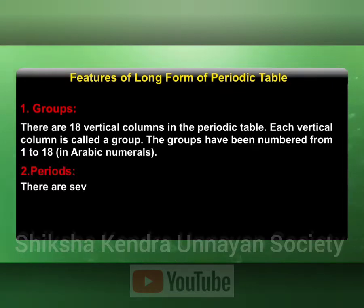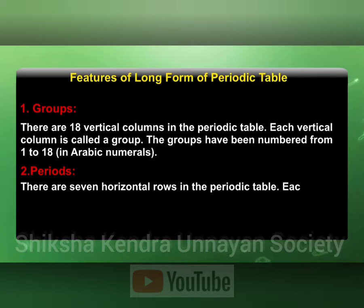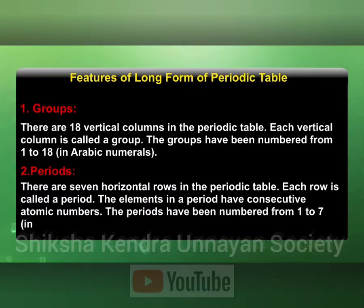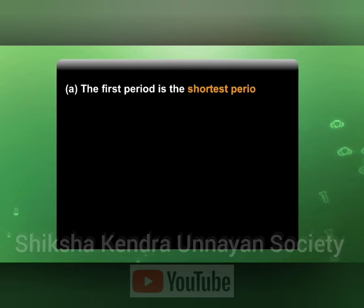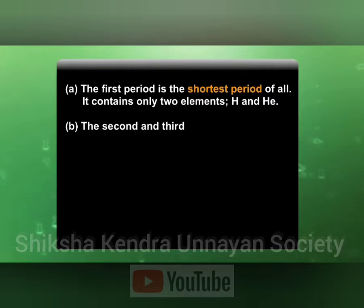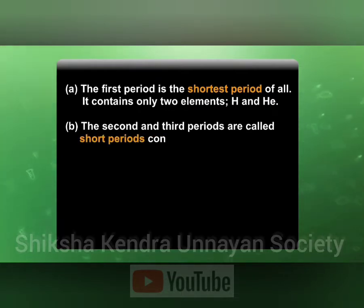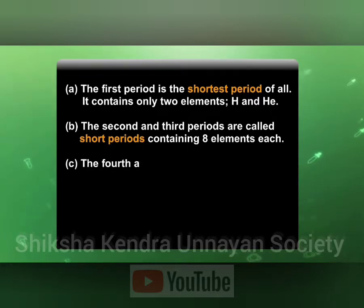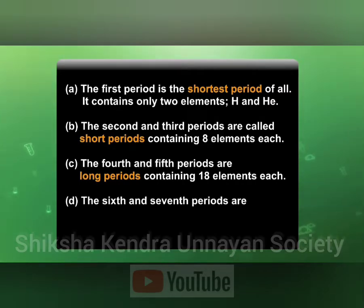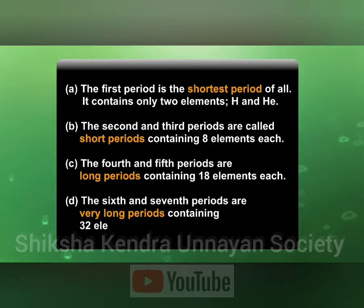Periods: there are 7 horizontal rows in the periodic table; each row is called a period. The elements in a period have consecutive atomic numbers. The periods have been numbered from 1 to 7 in Arabic numerals. The first period is the shortest, containing only 2 elements — hydrogen and helium. The second and third periods are called short periods, containing 8 elements each. The fourth and fifth periods are long periods, containing 18 elements each. The sixth and seventh periods are very long periods, containing 32 elements each.